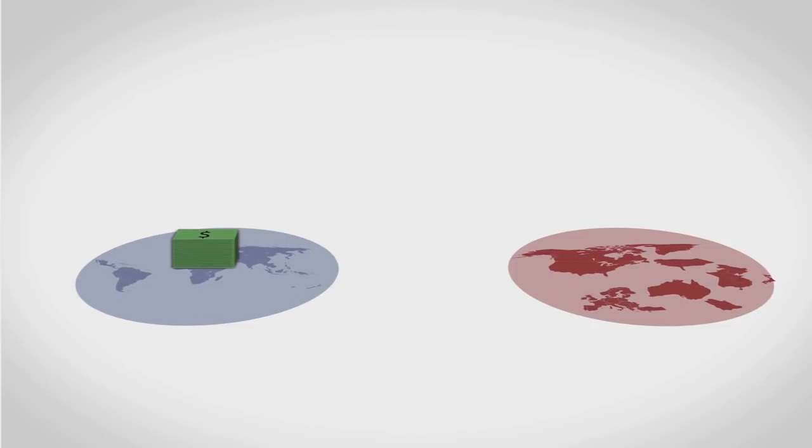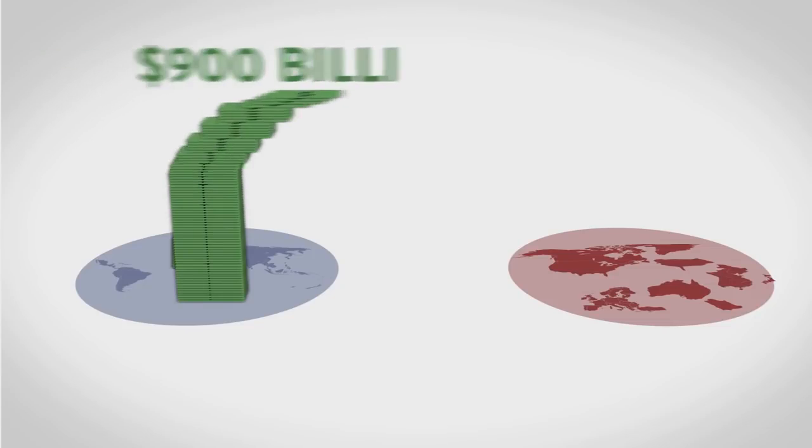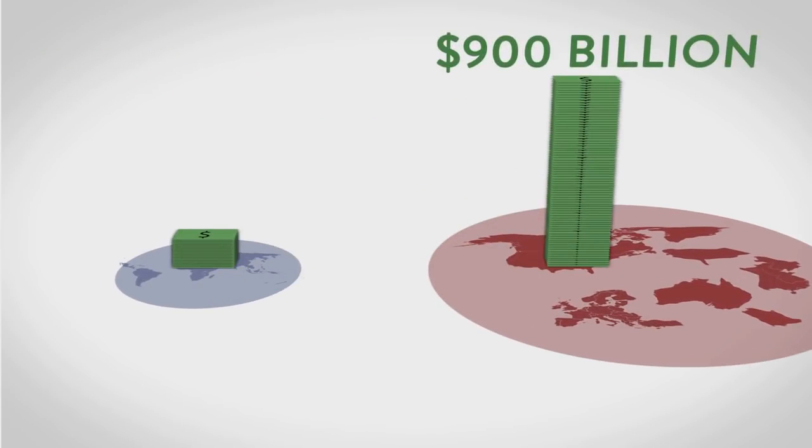One reason I found is that large corporations are taking more than $900 billion out of poor countries each year through a form of tax avoidance called trade mispricing.